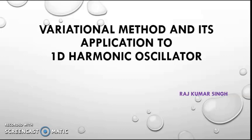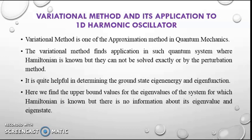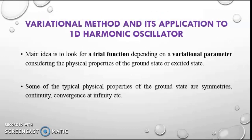The variational method is one of the approximation methods in quantum mechanics. It finds application in quantum systems where the Hamiltonian is known but cannot be solved exactly or by the perturbation method. It is quite helpful in determining the ground state energy and eigenfunction. Here we find the upper bound values for the given eigenvalues of the system for which the Hamiltonian is known but there is no information about its eigenvalues and eigenstates.